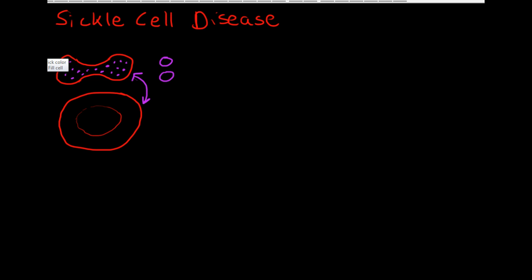But what happens in sickle cell disease is there is a genetic mutation which causes a very slight change in hemoglobin. In some conditions, like low oxygen or dehydration, the hemoglobin, instead of staying in its globular form, gets stuck together. It sticks to itself and forms long, rigid, rod-shaped polymers.